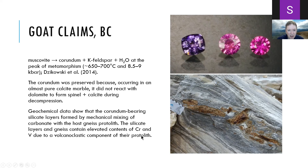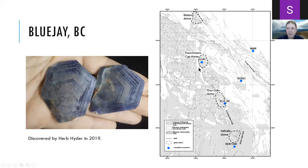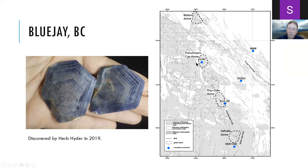The most recent discovery is in British Columbia — the Blue Jay claim, sapphire discovered in 2019. The Blue Jay location is right on the edge of a metamorphic core complex called the Thoroden Dome. The Goat Claims are associated with the Frenchman's Cap Dome — both metamorphic core complexes featuring very high grades of metamorphism with peak metamorphism high enough to produce gem corundum.